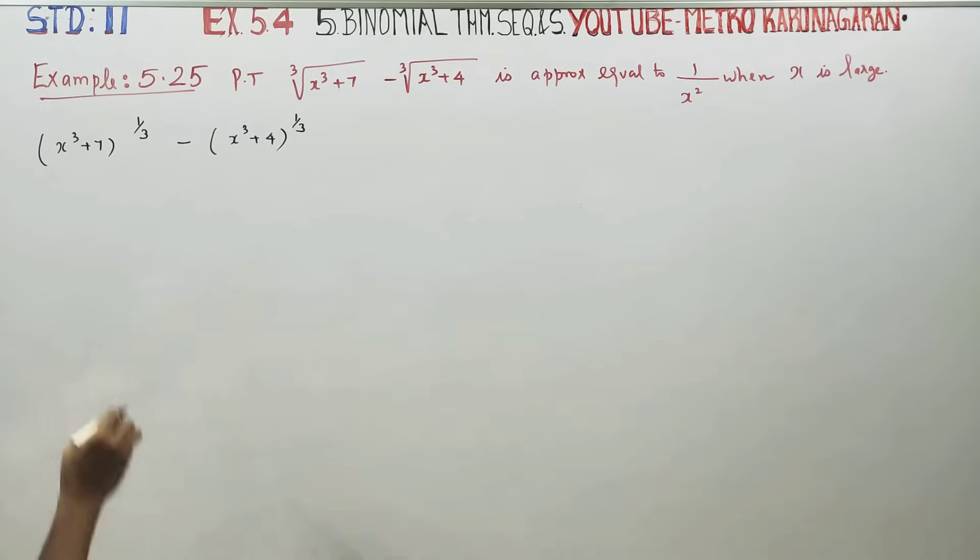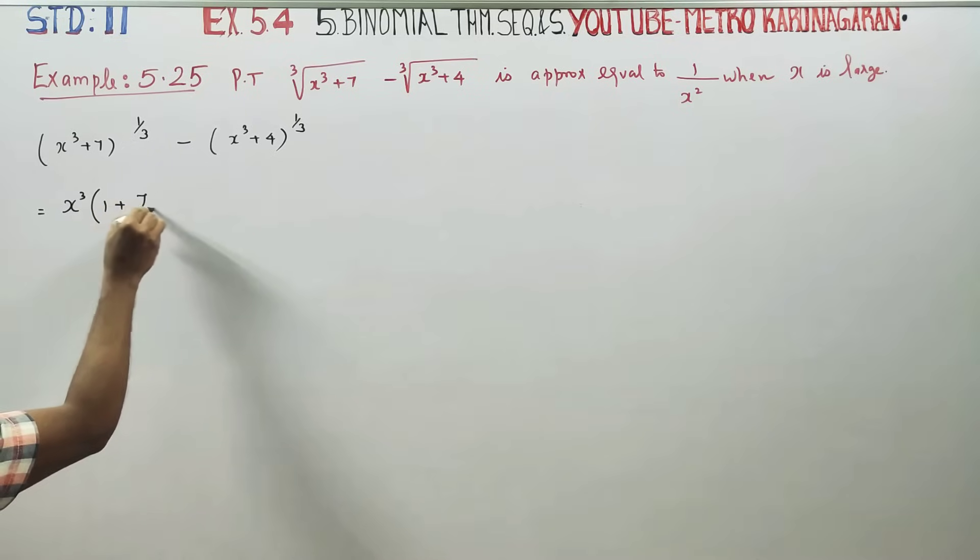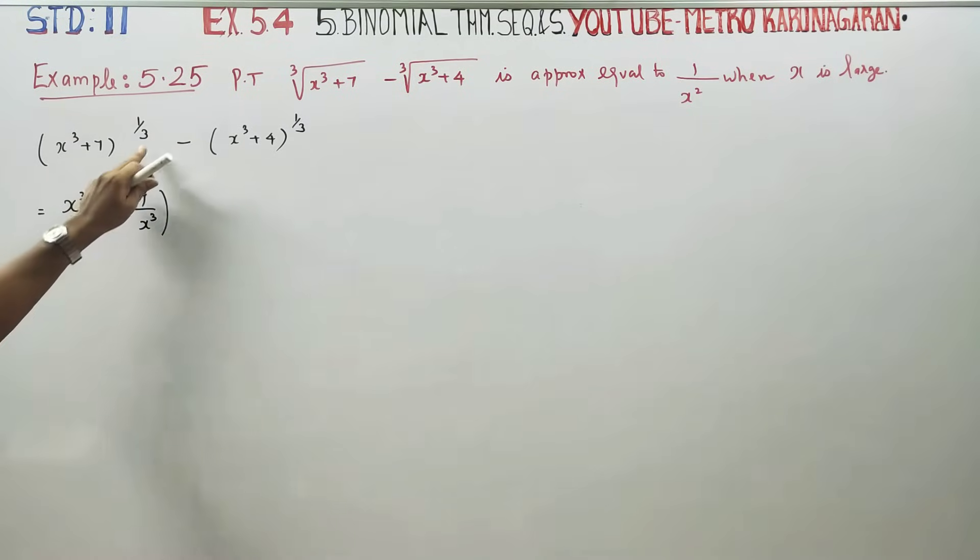If you look at x³, the common power is 1/3. Taking x³ common with power 1/3, this becomes 7/x³ with power 1/3.